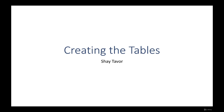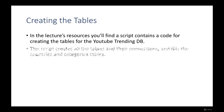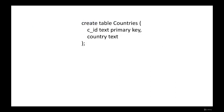After seeing the data model, it's time to create the real tables. In the resources from the previous lecture you'll find a script containing the code to create the tables of the YouTube Trending database. I'll show you how to run it and actually create the tables. This script creates all the tables and connections, and fills the countries and categories tables. Let's look at how we create a single table. We use the CREATE TABLE command — the syntax is CREATE TABLE followed by the table's name. For example, 'countries' for the countries table. Note that this language is not case sensitive.